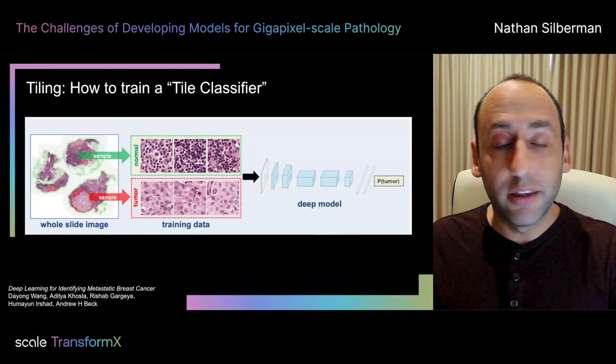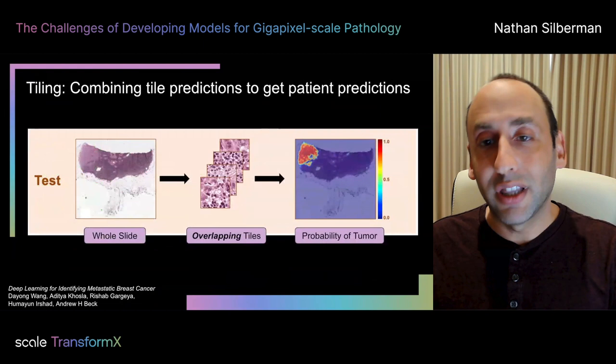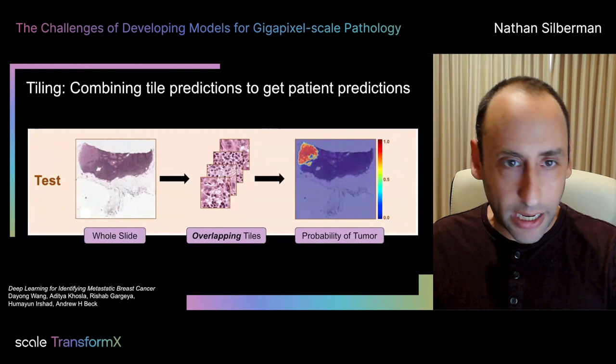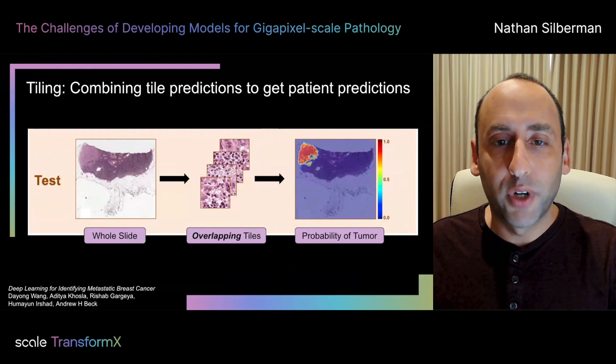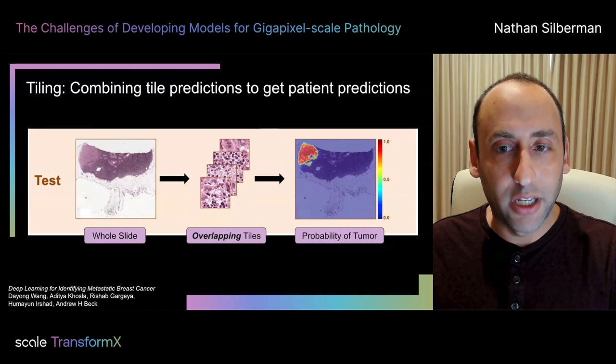Keep in mind that this model is making predictions at the tile level and not at the patient level. To make predictions for an individual patient, we take the patient slide and extract overlapping tiles from every few pixels. Our tile classifier examines each tile and produces a probability that that tile contains a tumor or not. Those predictions can be visualized as a probability-of-tumor map, where each location represents where a tile was extracted from the original image and its value is the model's confidence of finding a tumor there.